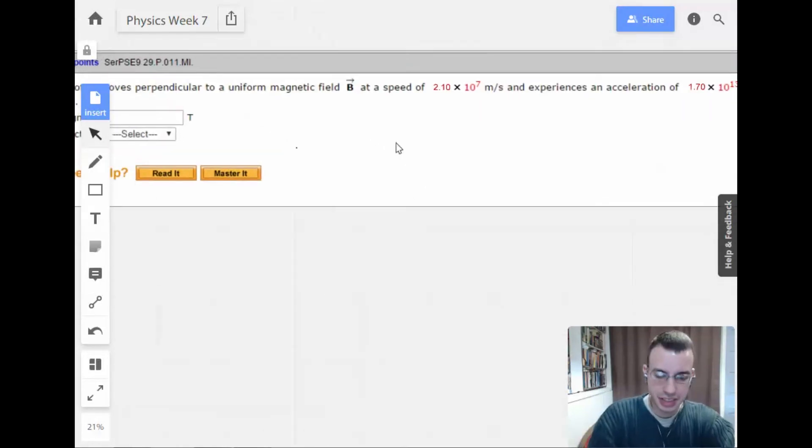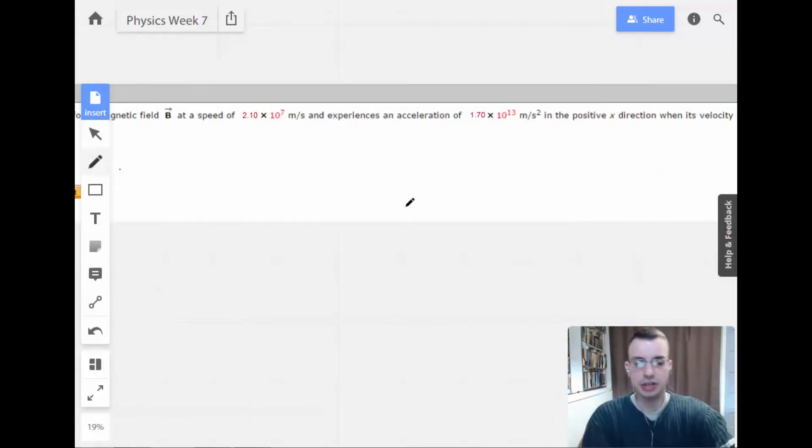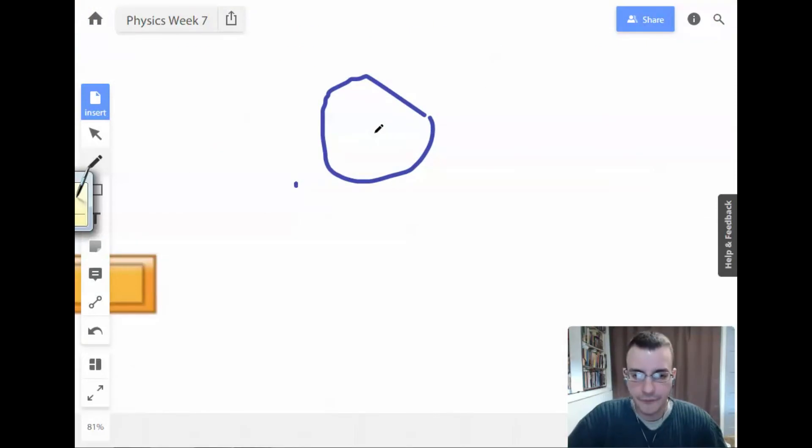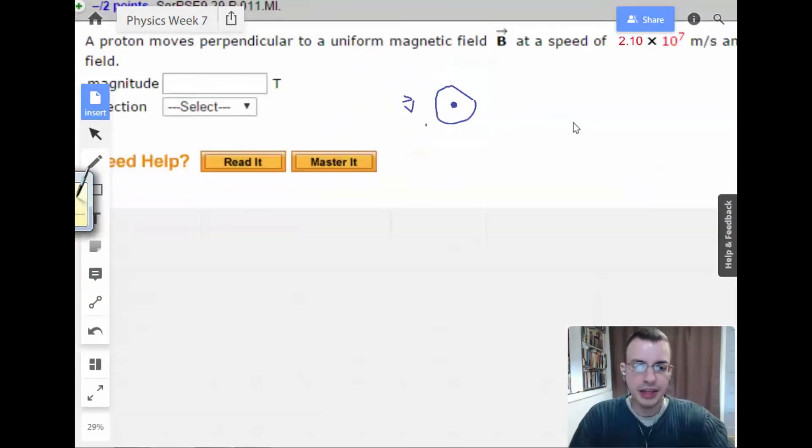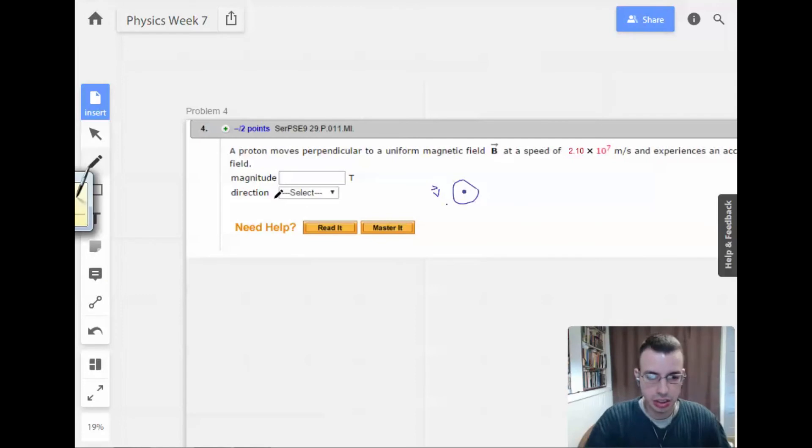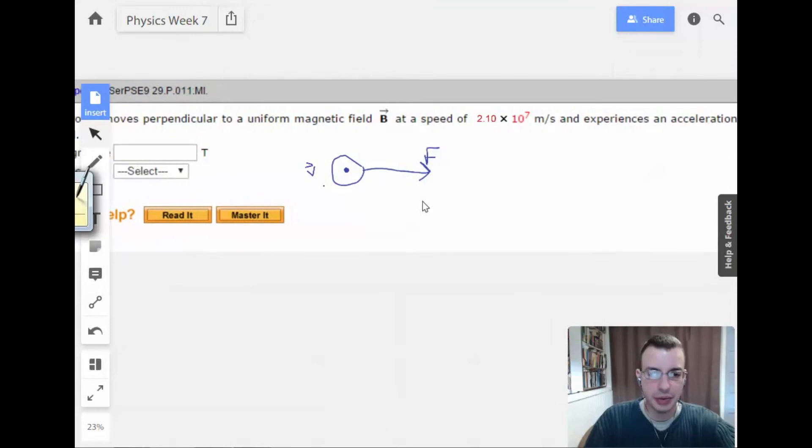I'm going to minimize understanding here and just draw the picture. So this proton is moving in the z direction. I'm going to call positive z towards us. So this is velocity. And then it says that it experiences an acceleration in the x direction. So it's experiencing acceleration in this direction. Instead of saying acceleration, though, I'm going to say force, because force equals mass times acceleration.